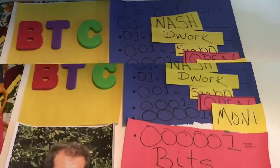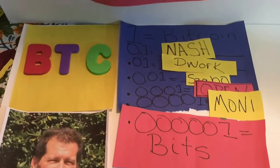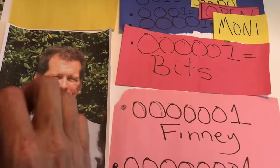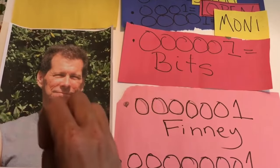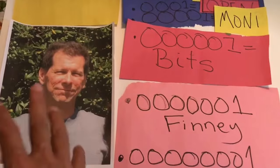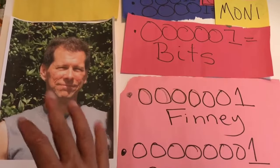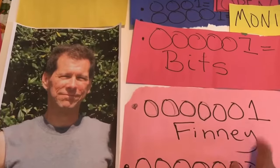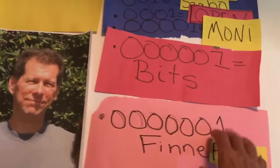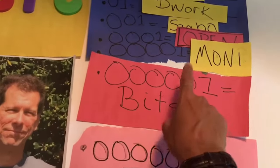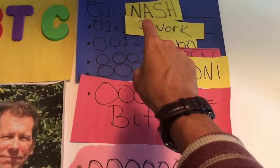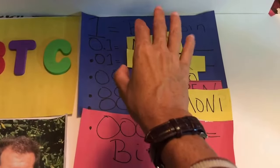The seventh decimal point is the 'Finney,' already named after Hal Finney, who was instrumental in launching Bitcoin. He received the first Bitcoin transaction from Satoshi Nakamoto and they communicated frequently right up until Satoshi left and Finney passed away. Finney is also often speculated to be Satoshi Nakamoto, though much of that has been debunked. Ten finneys give you one bit.